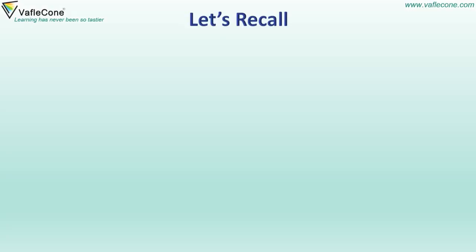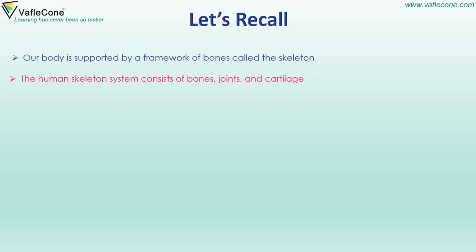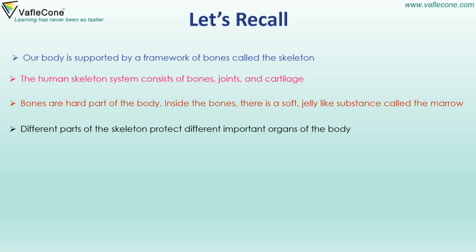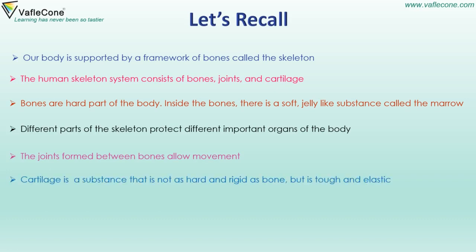Now let's recall. Our body is supported by a framework of bones called the skeleton. The human skeletal system consists of bones, joints, and cartilage. Bones are a hard part of the body; inside the bones there is a soft, jelly-like substance called the marrow. Different parts of the skeleton protect different important organs. Joints formed between bones allow movement. Cartilage is a substance that is not as hard and rigid as bone but is tough and elastic. Muscles can be either voluntary or involuntary.